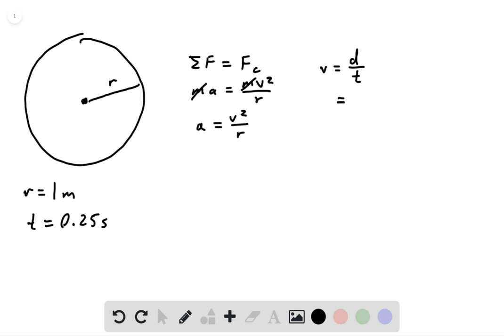The distance will be 2 pi r, and time is just t. So we can plug v back into our radial acceleration formula.